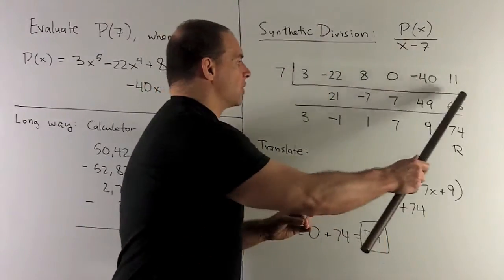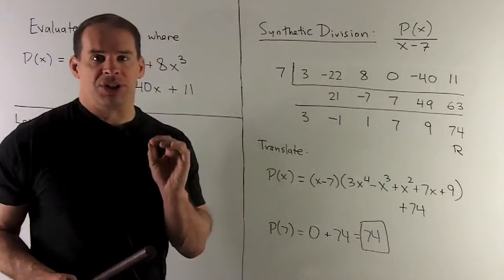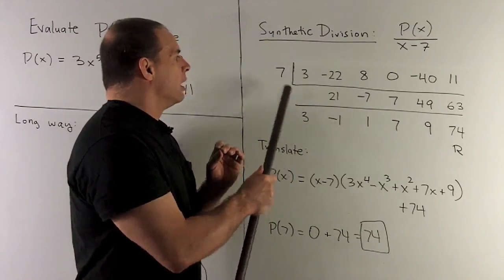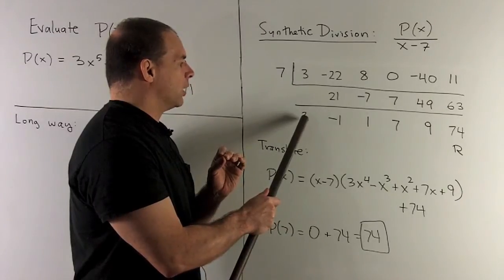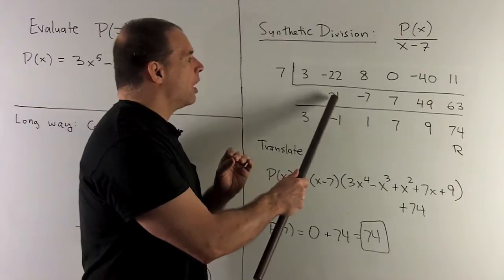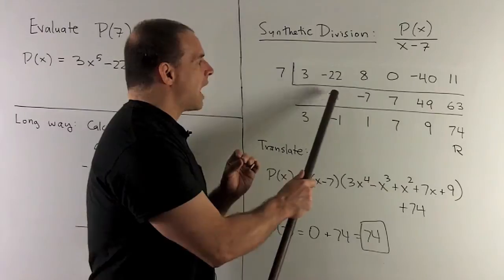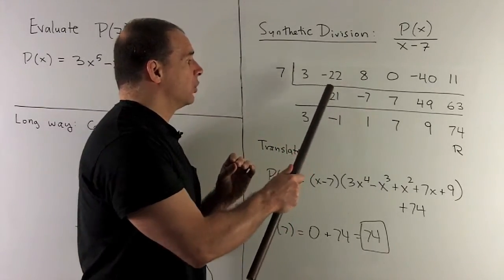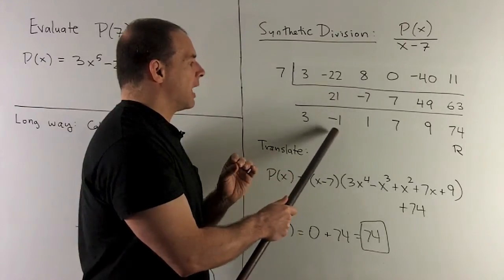So we put them in a row. How do we proceed with the division? Okay, so I start off with the 3. I drop it down, multiply by 7, gives me a 21. I record the 21 in the middle and the slot over by 1. I add down the next column. So I'm going to have minus 22 plus 21 gives me a minus 1.